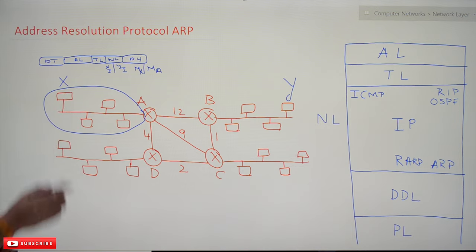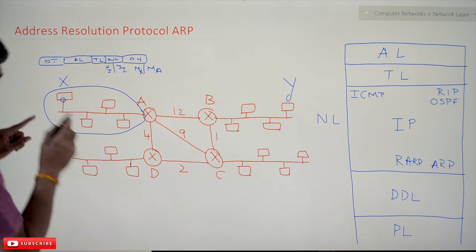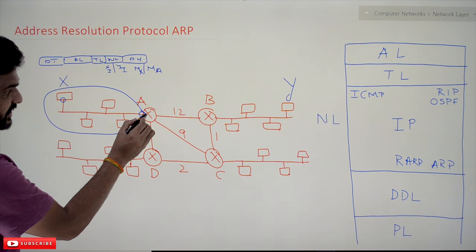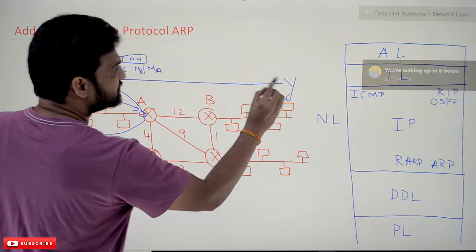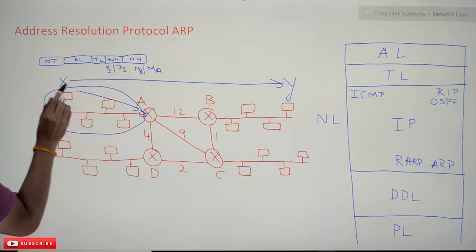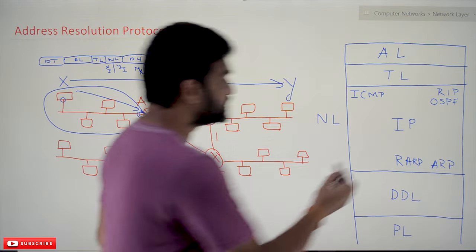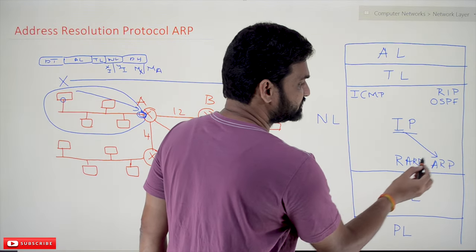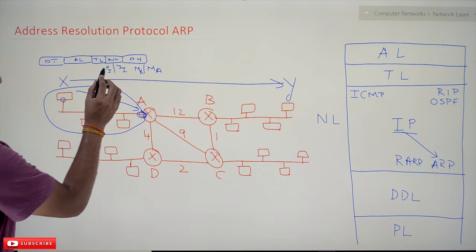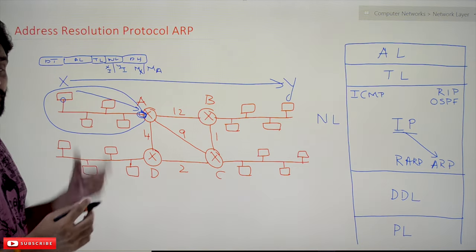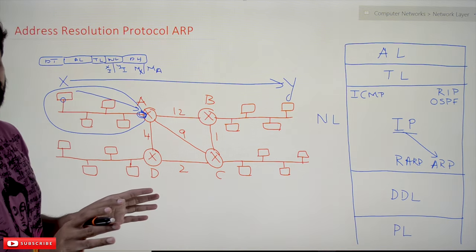MAC address is the NIC card (Network Interface Card) address. We have to get the MAC address of A because the next node to communicate with is A — the first node-to-node communication is from X to A. That is where ARP comes into action. The IP layer requests ARP to get the address of A. ARP will compare: are X and Y in the same network? No, they are not in the same network.